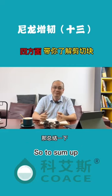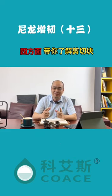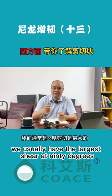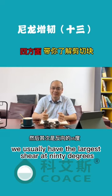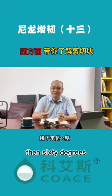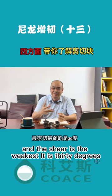So to sum up: for shearing, under the condition of a certain thickness, we usually have the largest shear at 90 degrees, followed by reverse 45 degrees, then 60 degrees, then 45 degrees, and the weakest shear is at 30 degrees.